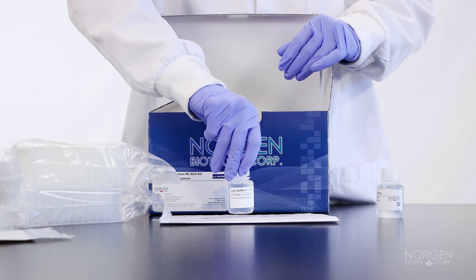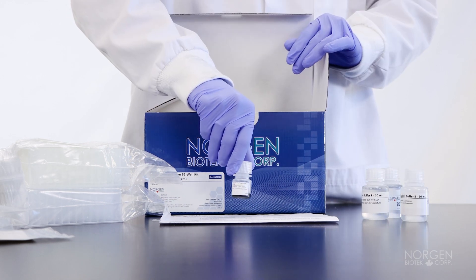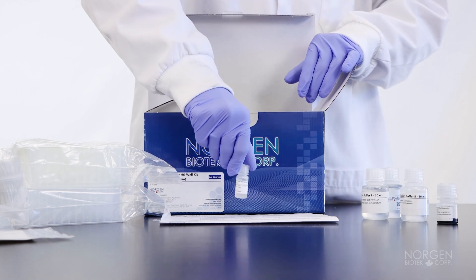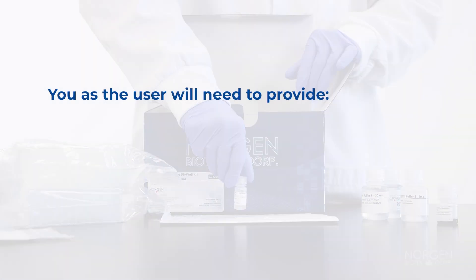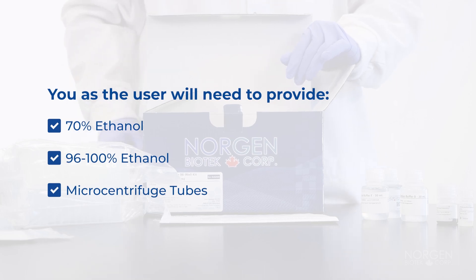The kit also includes two bottles of lysis buffer F, elution buffer B, magnetic bead suspension, and Proteinase K in storage buffer. You as the user will need to provide 70% ethanol, 96-100% ethanol, and microcentrifuge tubes.